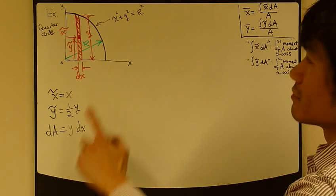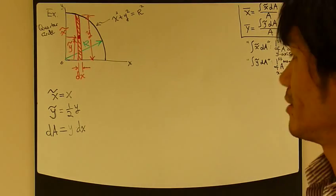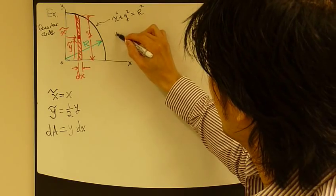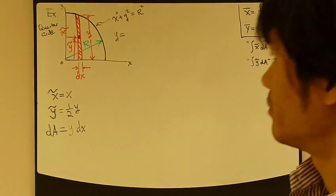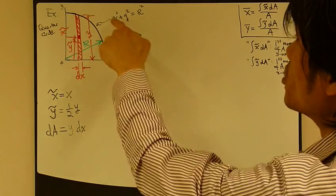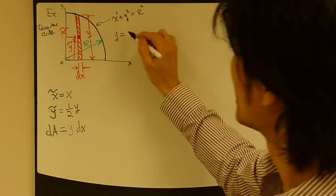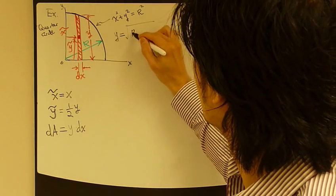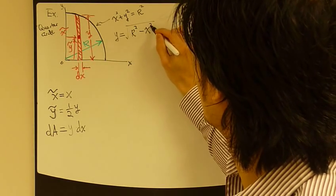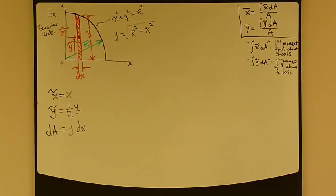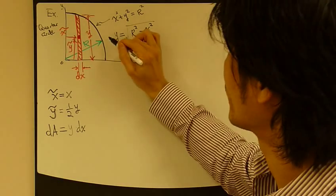Here, from this equation, I can rewrite in this form: y equals, just move everything over, take square root, so this becomes r squared minus x squared. So that's my y.